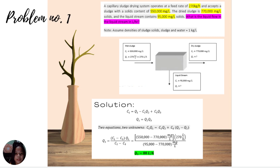Q1 equals Q2 plus Q3 — two equations, two unknowns. From the combined mass balance: C1 times Q1 equals C2 times Q2 plus C3 times (Q1 minus Q2). Solving for Q2: Q2 equals (C1 minus C3) times Q1 over (C2 minus C3), which gives (550,000 minus 95,000) times 270 over (770,000 minus 95,000) equals 88 liters per hour. So the liquid flow in the liquid stream is 88 liters per hour.